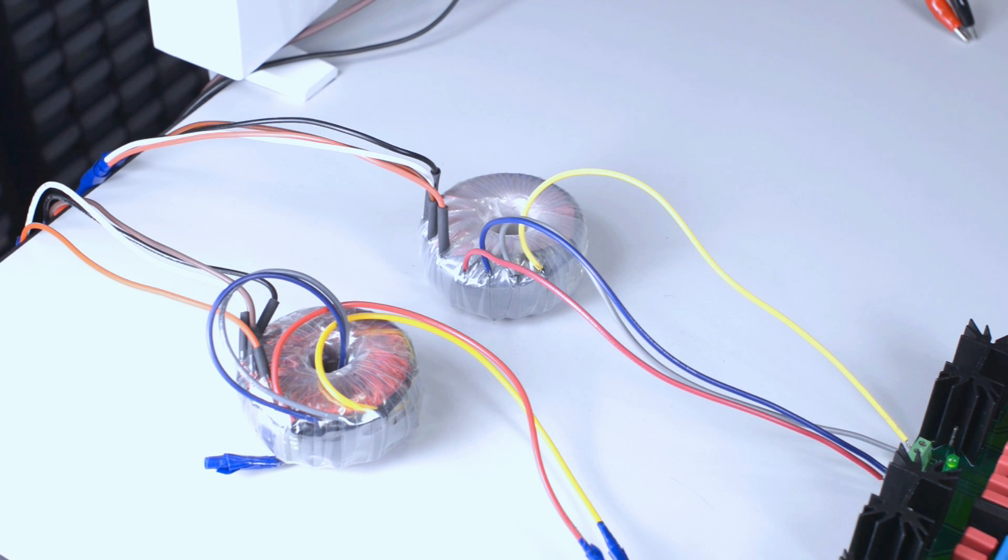The transformer which is the furthest from us is a filament transformer delivering low AC voltage to the left and right channels of the power supply, which then is converted to DC voltage and supplied to the filaments of the left and right channel.